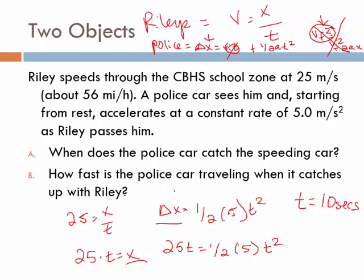How fast is the police car traveling when it catches up to Riley? Now we have to do a second kinematic. For our purposes, we're going to try this one because it's easier. The initial velocity is zero, acceleration is 5, time is 10, which means the final velocity is 50 meters per second.